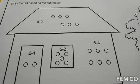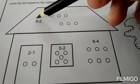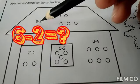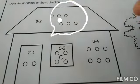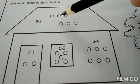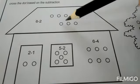Let's start from the roof. Look at the picture: six minus two. Count it out: one, two, three, four, five, six.